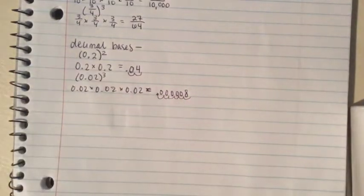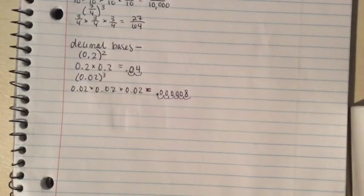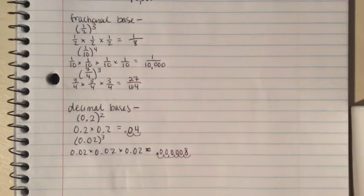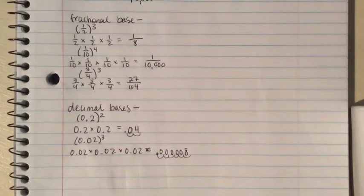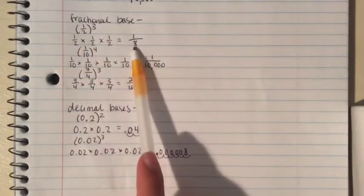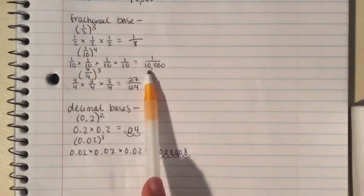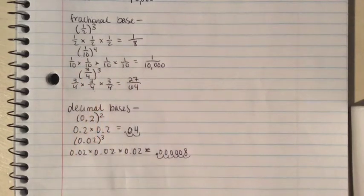So that's a very small number. Notice that when you put a fractional base to a power, the number gets smaller. So here, one-half goes to one-eighth, one-tenth to 1 over 10,000—the numbers are all smaller.